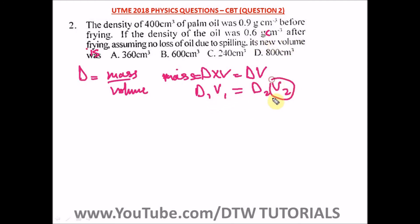So making V2 subject of the formula here, what are we going to have? We just divide both sides by what? D2. So we have D1 V1 divided by D2.